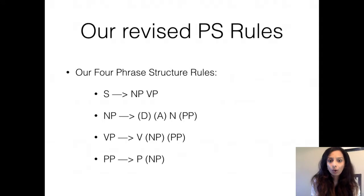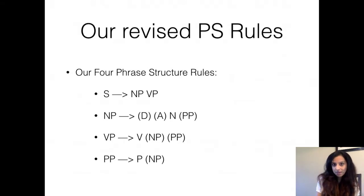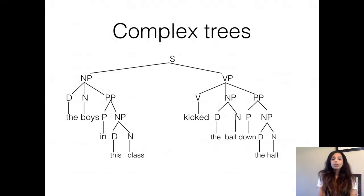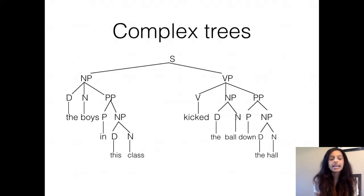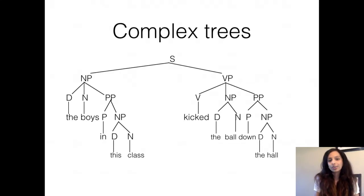So here are the four phrase structure rules we have: S goes to NP VP — a subject and a predicate. NP goes to an optional D, optional A, obligatory N, and an optional PP. VP goes to a V, an optional NP, and an optional PP. And PP goes to a P and an optional NP. Now you can draw more complicated trees such as 'the boys in this class kicked the ball down the hall.' I want you to do this on your own in your notebook, identifying the categories, prepositional phrases, noun phrases, verb phrase, and creating the tree top-down.